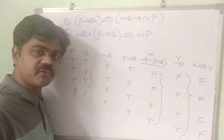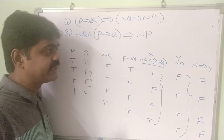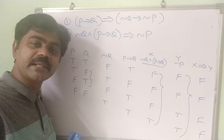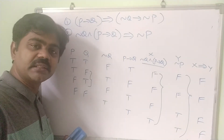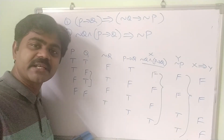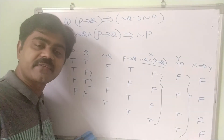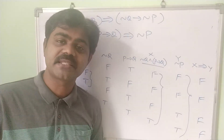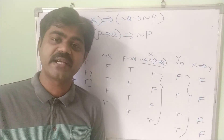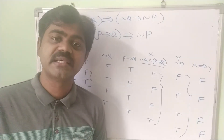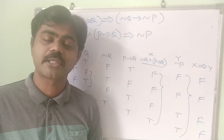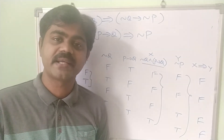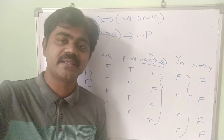Since they are not the same, they are not tautologically implied, so we write all false. If both are tautologically implied we write all truths; if not, we write all false. I hope you understood tautological implications. Please subscribe, share my videos with your friends and well-wishers, and support our channel in all possible ways. Thank you very much and have a wonderful day.